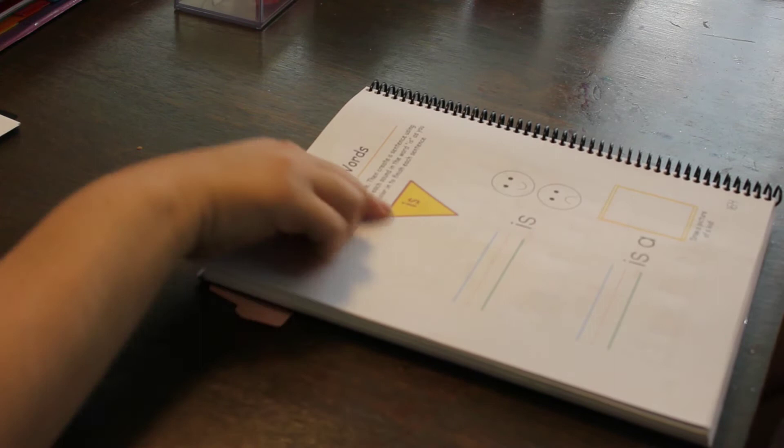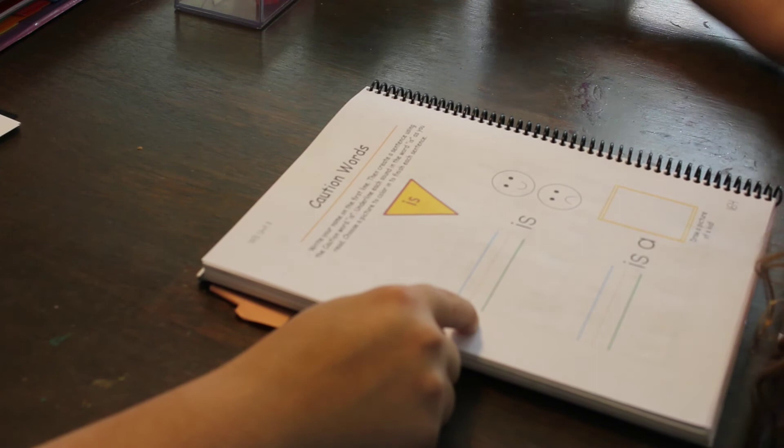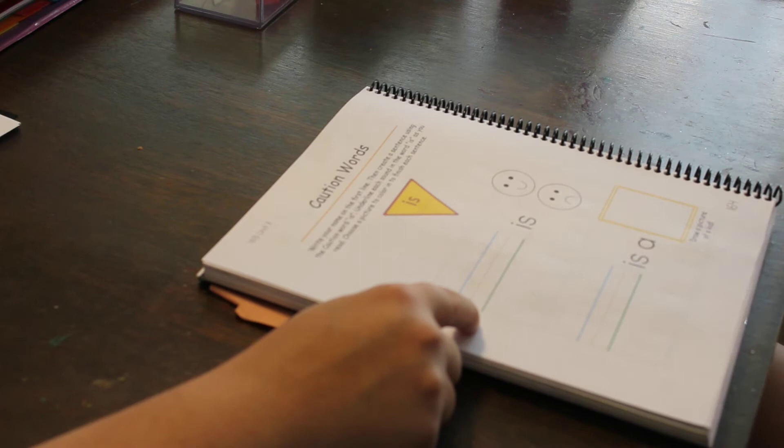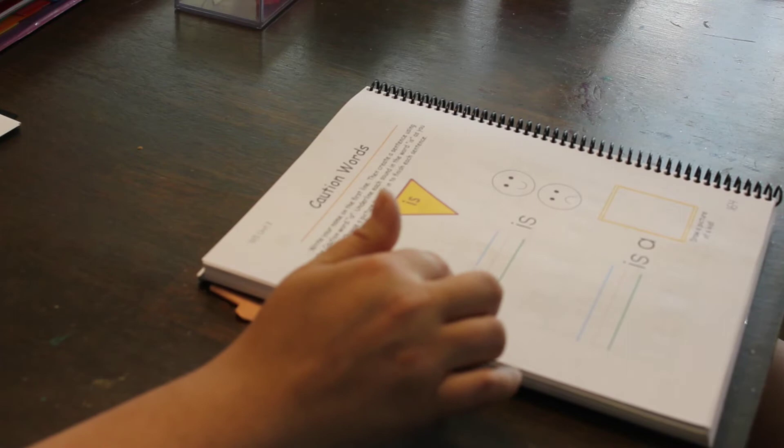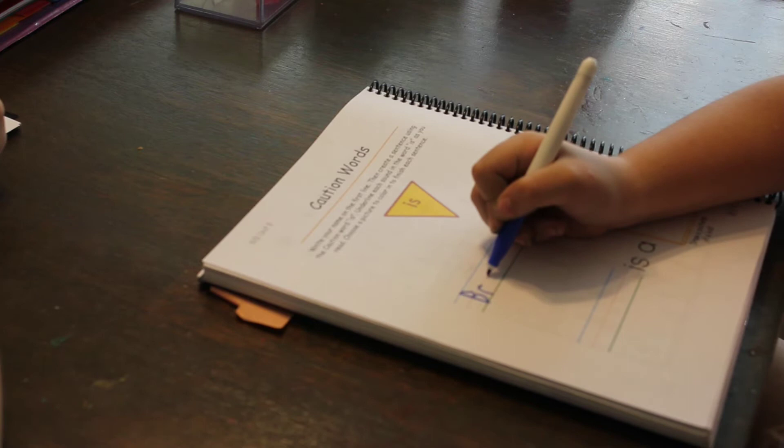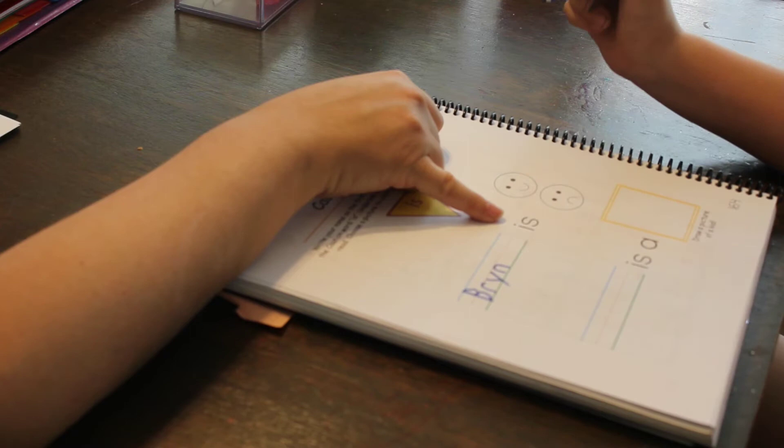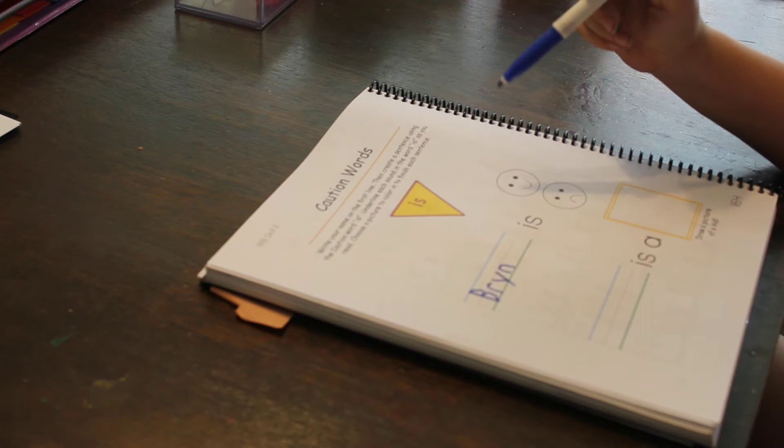We are going to learn about two caution words. The first one is this word. Do you know what this word is? Is. Is, is, is. It says write your name on the line and then create a sentence using the caution word 'is'. Write your name here. Say your sounds. The cat is. But what is this word? Is. Are you happy or sad?